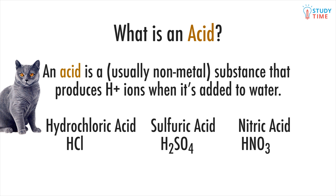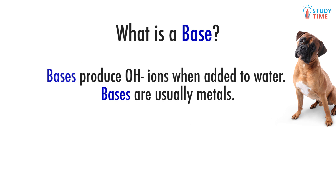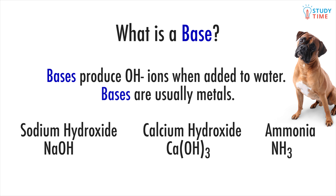Acids have a sort of opposite called bases. Bases produce OH- ions when added to water. Bases are usually metals. Bases you've come across include sodium hydroxide, NaOH, calcium hydroxide, CaOH3, and ammonia solution, NH3.